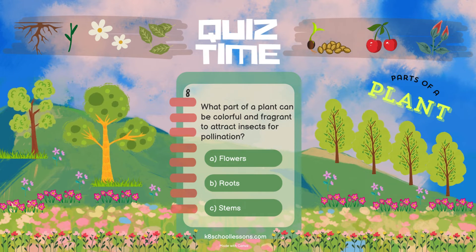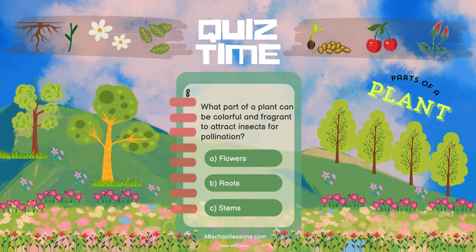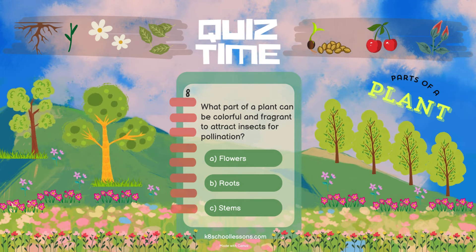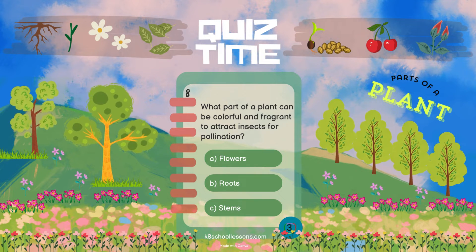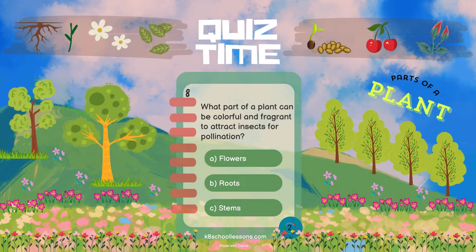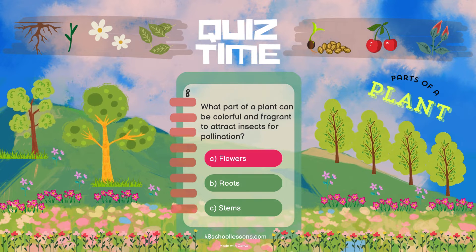What part of a plant can be colourful and fragrant to attract insects for pollination? Flowers.